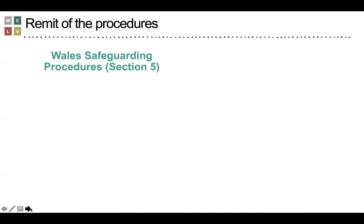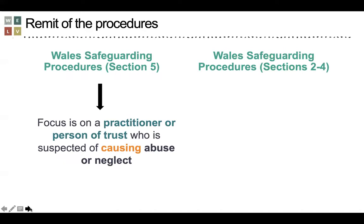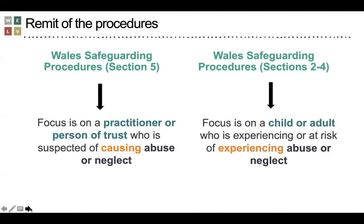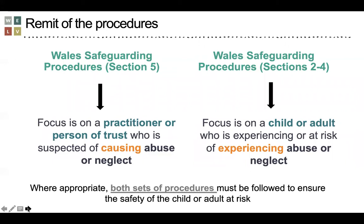It's important to understand how the remit of Section 5 relates to the remits of Sections 2 to 4 in the same procedures. Section 5 has a focus on the practitioner or the person of trust who is suspected of causing abuse or neglect, whereas Sections 2 to 4 have a focus on the child or the adult at risk who is experiencing or at risk of abuse or neglect. Where appropriate, both sets of procedures must be followed to ensure the safety of the child or adult at risk.